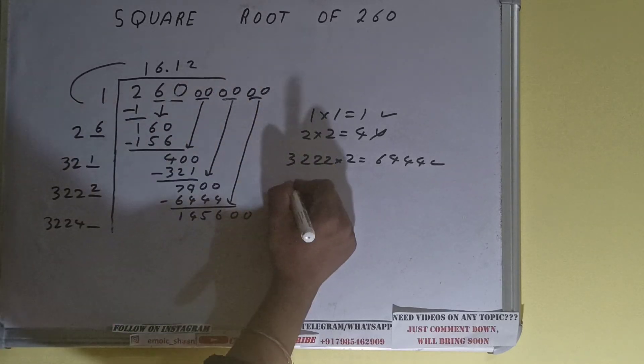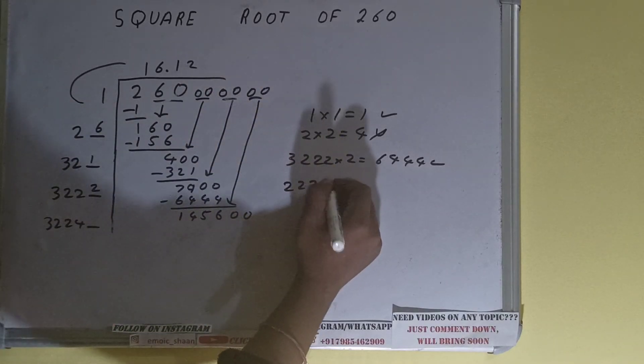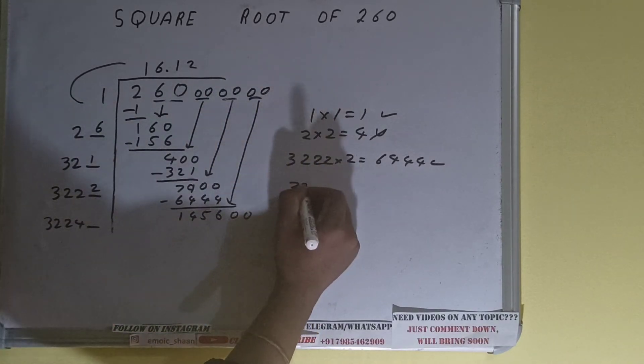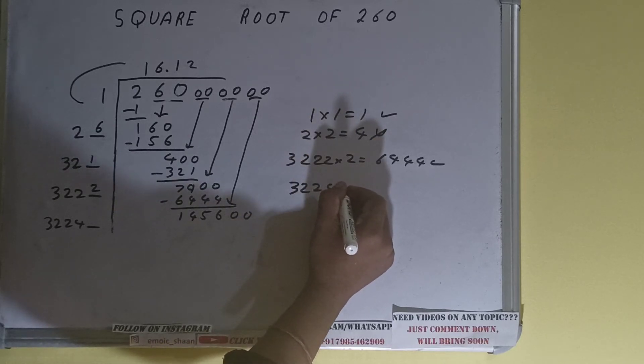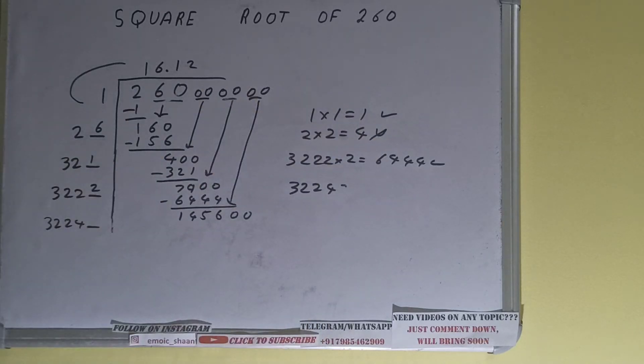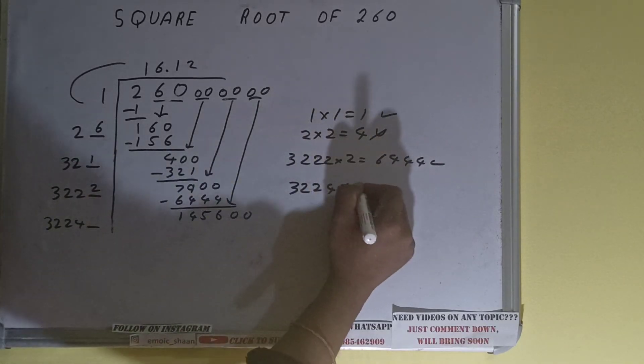Now we can try four times. 3224 into 4 we can try.